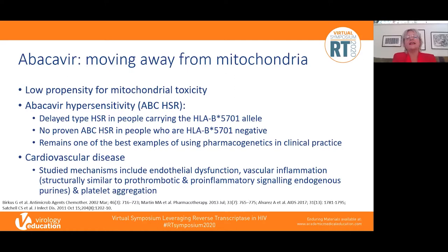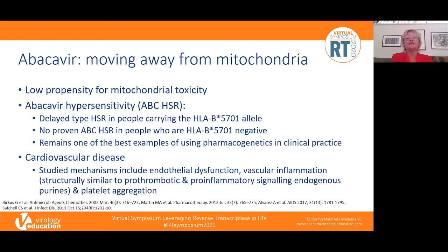Abacavir has a low propensity for mitochondrial toxicity, so new mechanisms emerge. The classic toxicity — abacavir hypersensitivity, a delayed-type reaction — occurs in people carrying the HLA-B*5701 allele. There have been no patch-test-proven hypersensitivity reactions in people negative for this allele, making this one of the best examples of successful pharmacogenetics in clinical practice. Cardiovascular disease is another debated toxicity; studied mechanisms include endothelial dysfunction, vascular inflammation, and structural similarity to endogenous purines involved in pro-thrombotic and pro-inflammatory signaling.